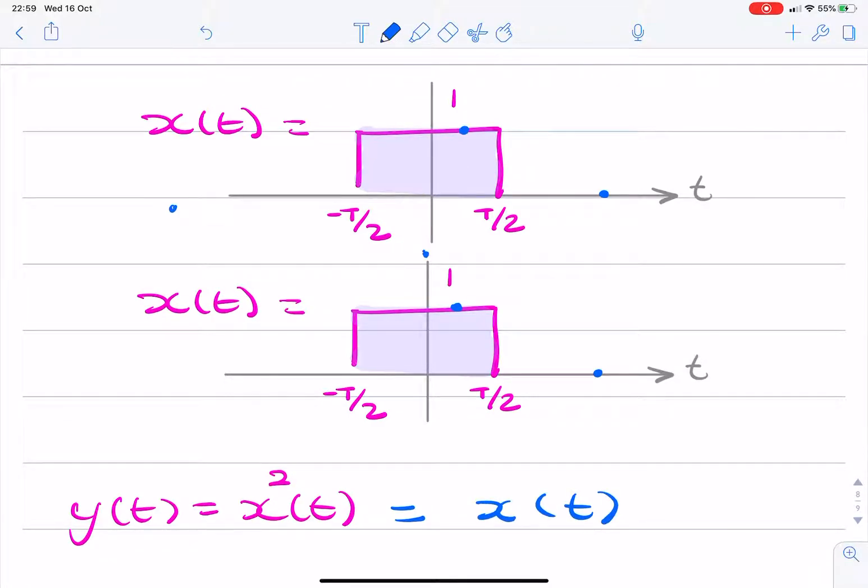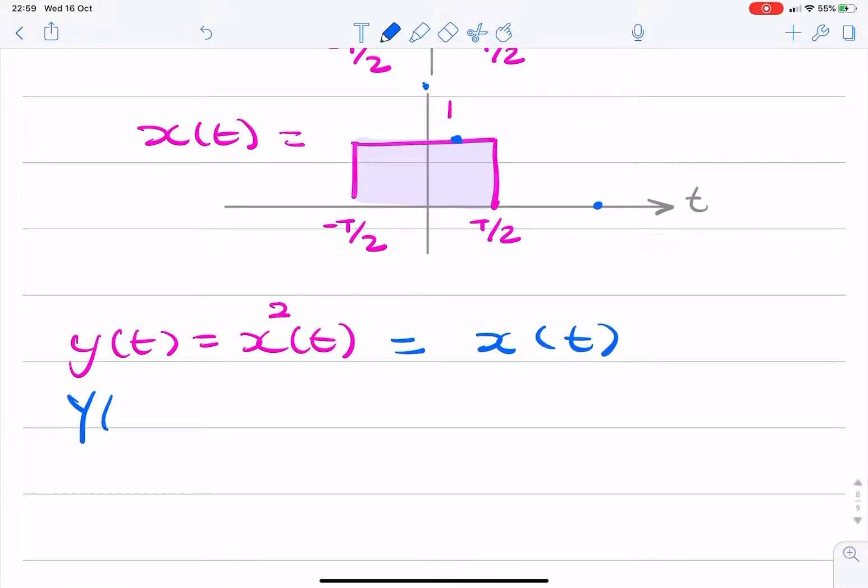That just happens to be the case. So y of t is the same as x of t. So Y of omega will be the same as X of omega. And we can use the Fourier pair that we're given in the question.